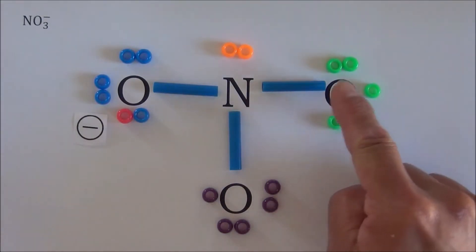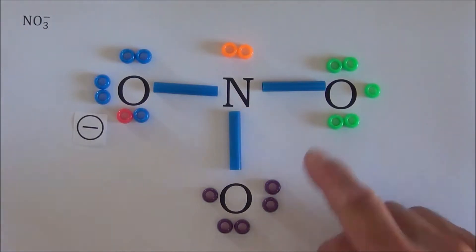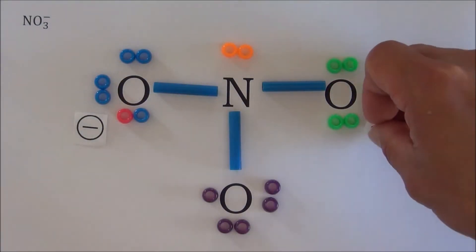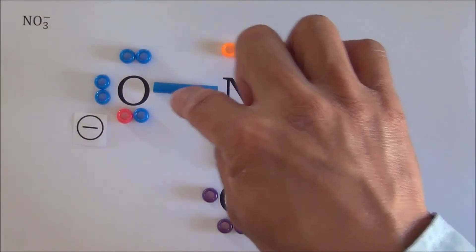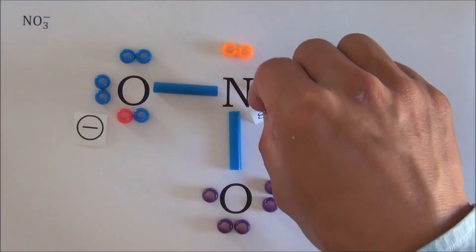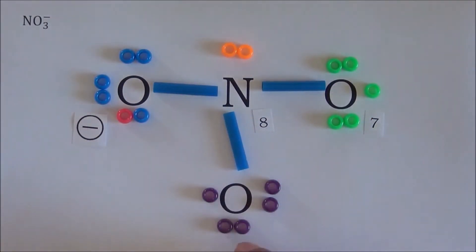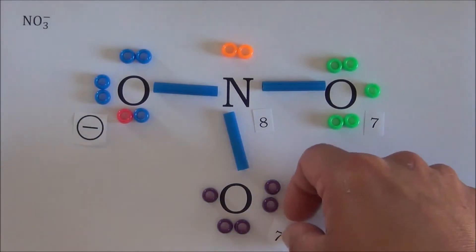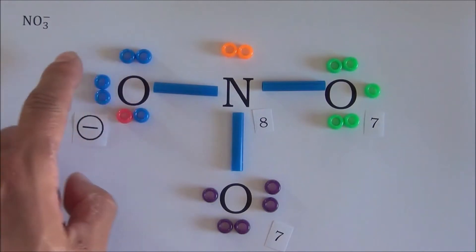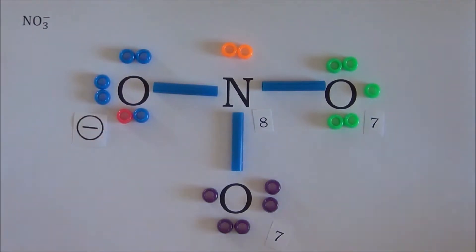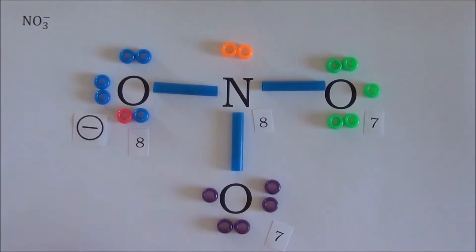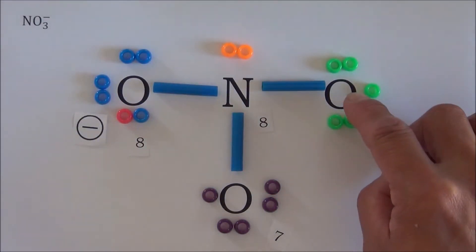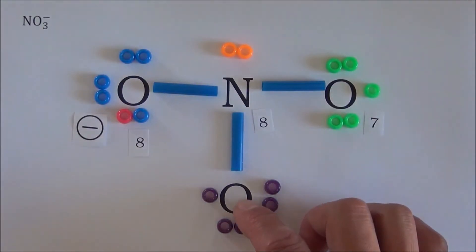Let's count the octet electrons for each atom. The oxygen atom on the right has seven octet electrons. The oxygen atom on the left has eight. The oxygen atom at the bottom has seven. Our goal is to make sure every atom has an octet, so we need to increase the number of octet electrons for the oxygen atom on the right and the oxygen atom at the bottom. There are two ways and only two ways to increase the number of octet electrons: one way is to share, and the other way is to borrow.